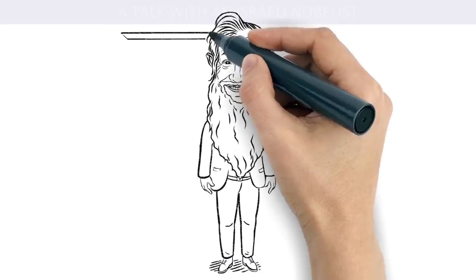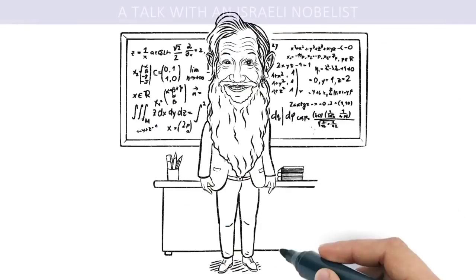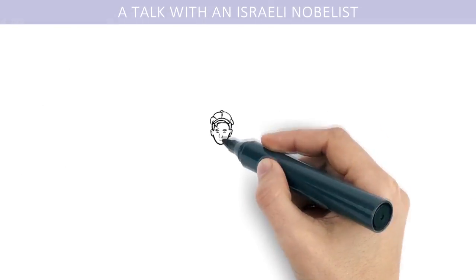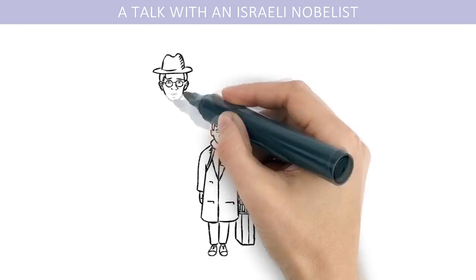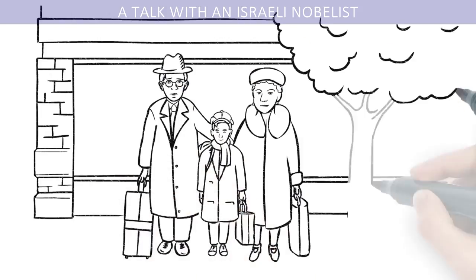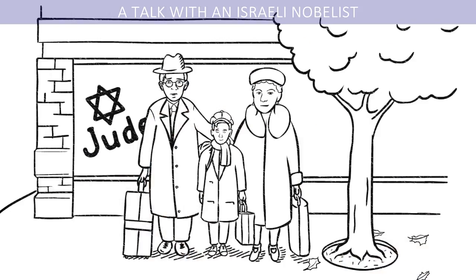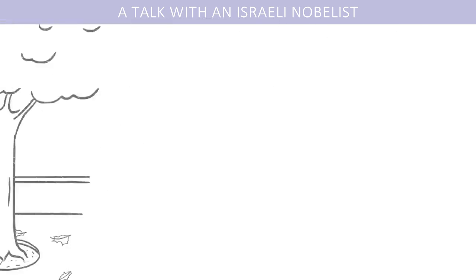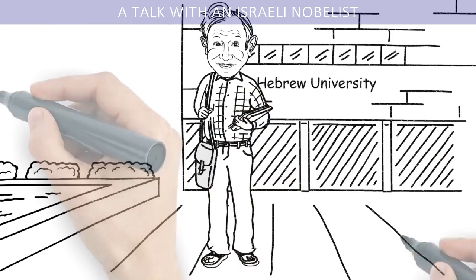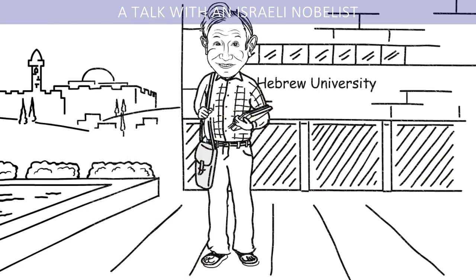Meet Professor Robert Aumann. He is an Israeli mathematician. He was born in 1930 in Germany and fled with his family to the United States in 1938, right before the Crystal Night Pogroms. In the 1950s, he joined the Hebrew University of Jerusalem.